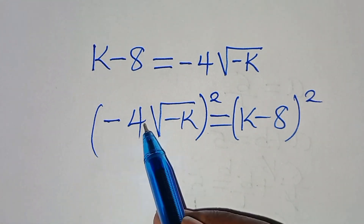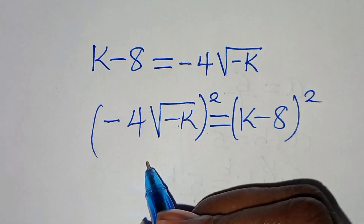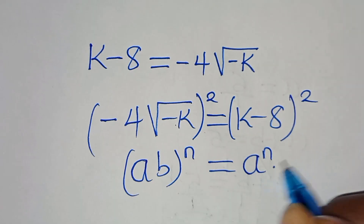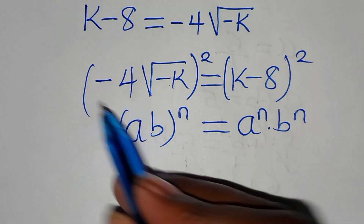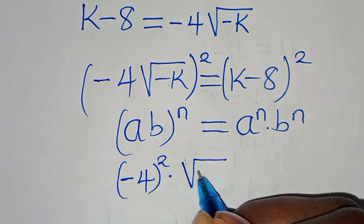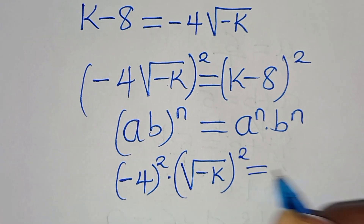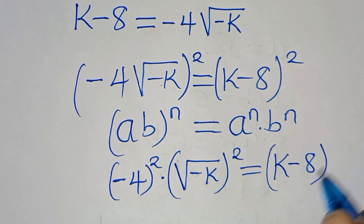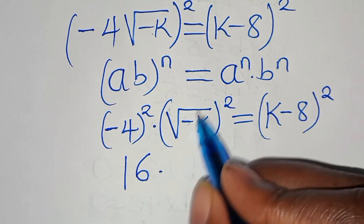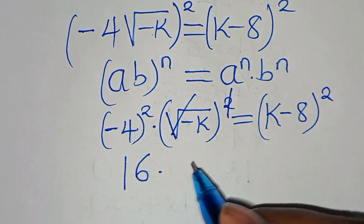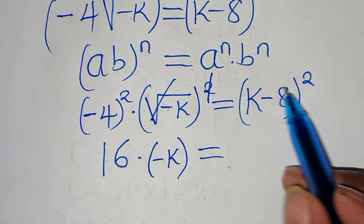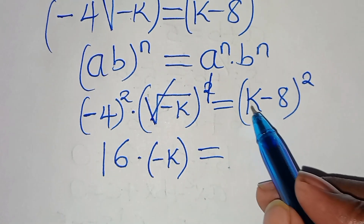Note that minus 4 times the square root of minus k, raised to the power of 2, is in the form of (a times b) to the power of n, which equals a to the n times b to the n. Therefore, we have minus 4 squared times the square root of minus k squared, equal to k minus 8 squared. Minus 4 squared is 16, and the square root of minus k squared eliminates the square root sign, giving us 16 times minus k.